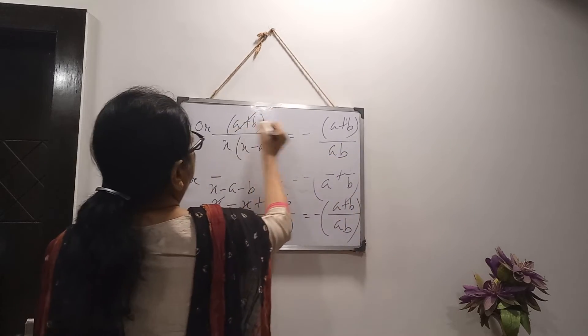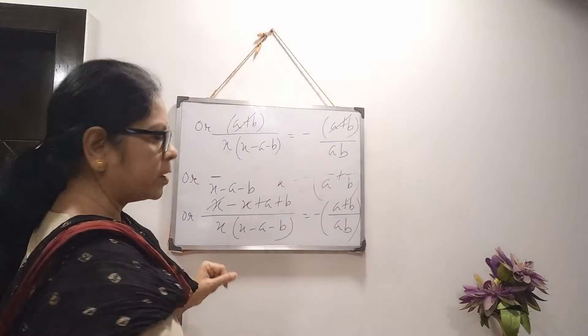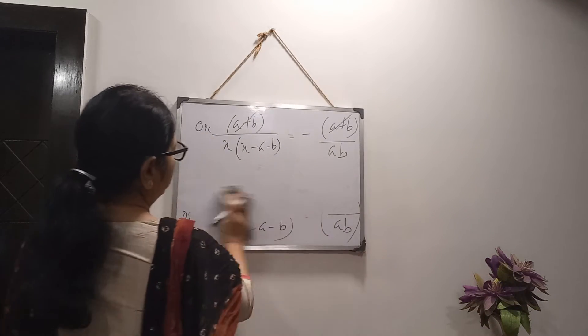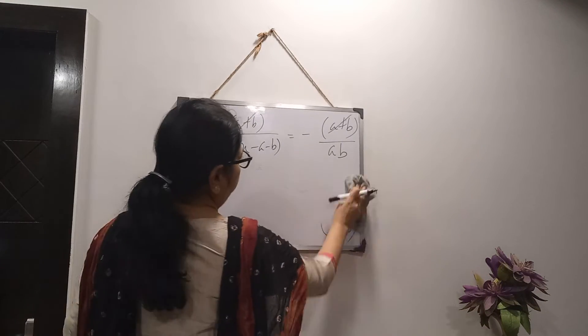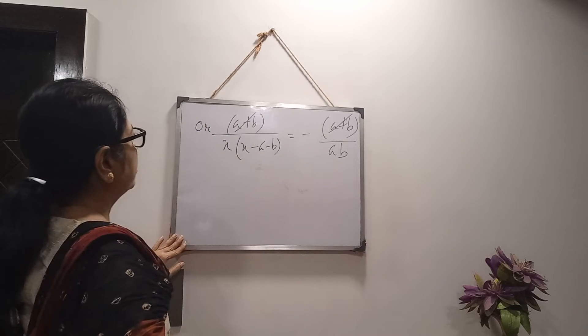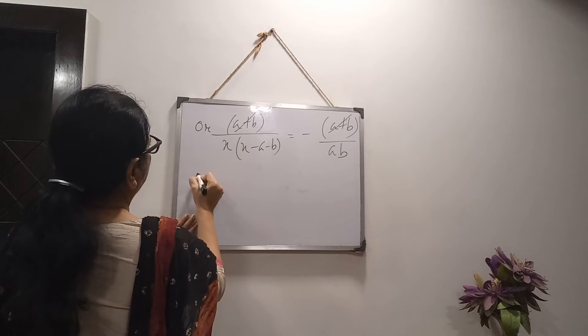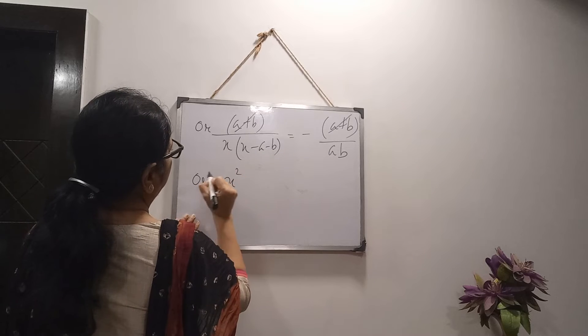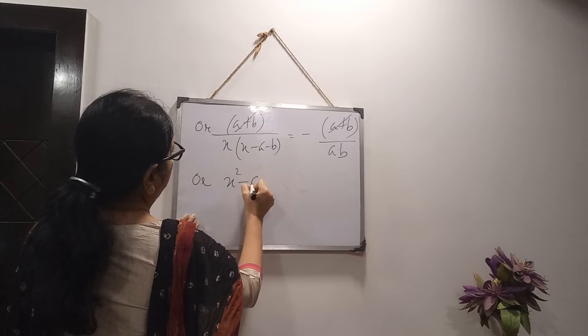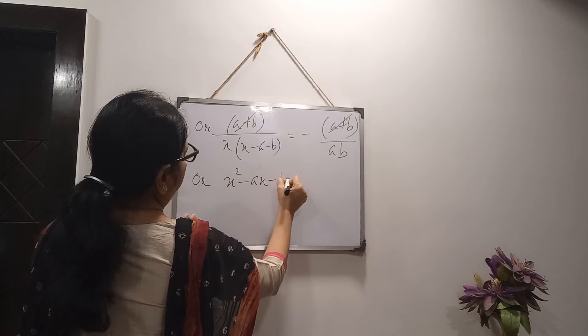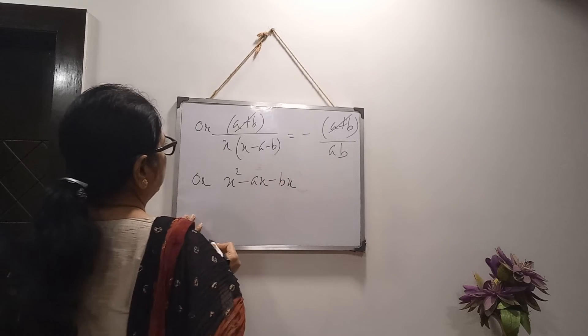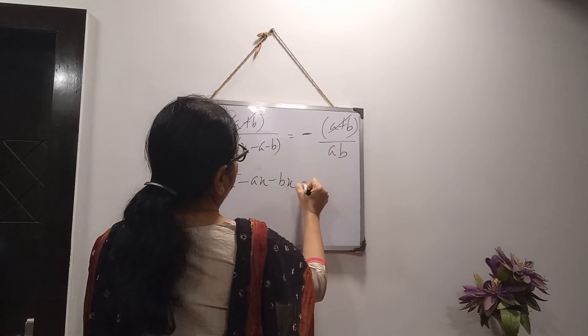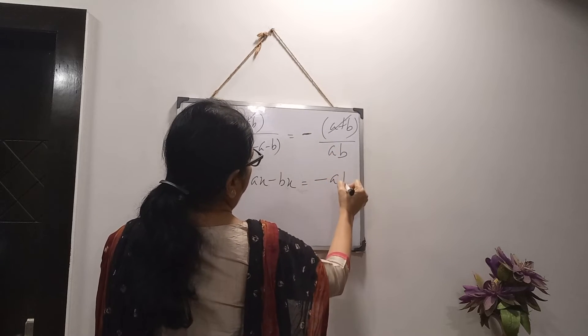Then, x is cancelled out. Numerator only a plus b. And denominator, x into x minus a minus b. And right side, this. Now, from both sides, a plus b, a plus b. This is constant term. You can cancel. So, what I am getting? This is cancelled out.